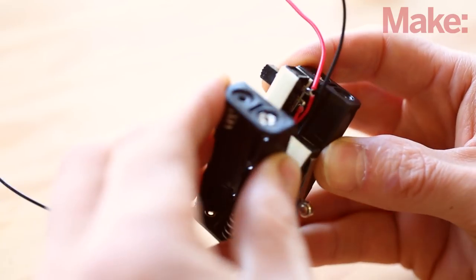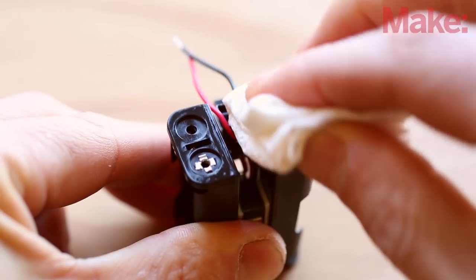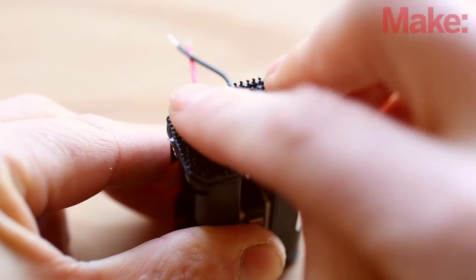Then, attach the battery holders back to back with the switches sandwiched between them. Clean the front side of the body with rubbing alcohol. Then, cut and apply a piece of Superlock fastener tape to fit it.